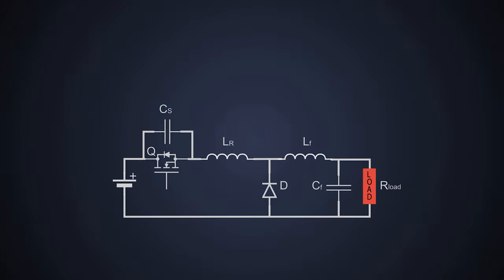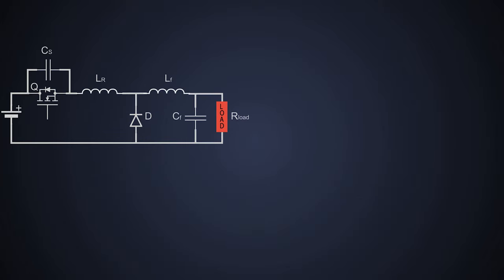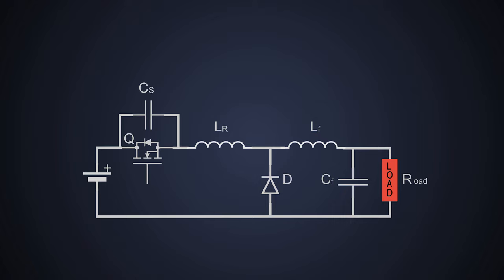To understand zero voltage switching, we'll take an example of a resonant buck converter circuit. There are different types of resonant buck converters, but we'll specifically look into M-type resonant buck converter, in which the resonant inductor and capacitor are connected in series with each other.